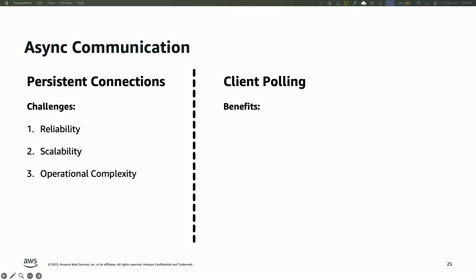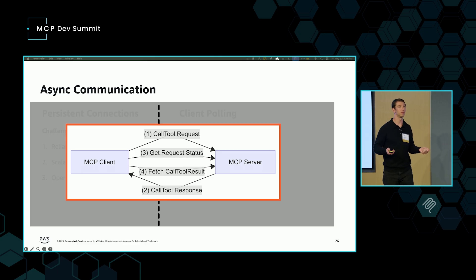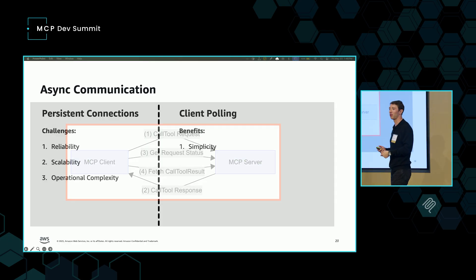One way to solve this is with client polling — a standard principle in async software development where the client essentially asks for a status and polls on it. In MCP, the client makes a call tool request, the server makes a call tool response and provides a task ID. That task ID tells the client what it can go ask about later. The MCP client can then make a follow-up request asking for the status, the server gives back the status, and the client keeps asking until the task is completed. Once it's completed, it can fetch the result.